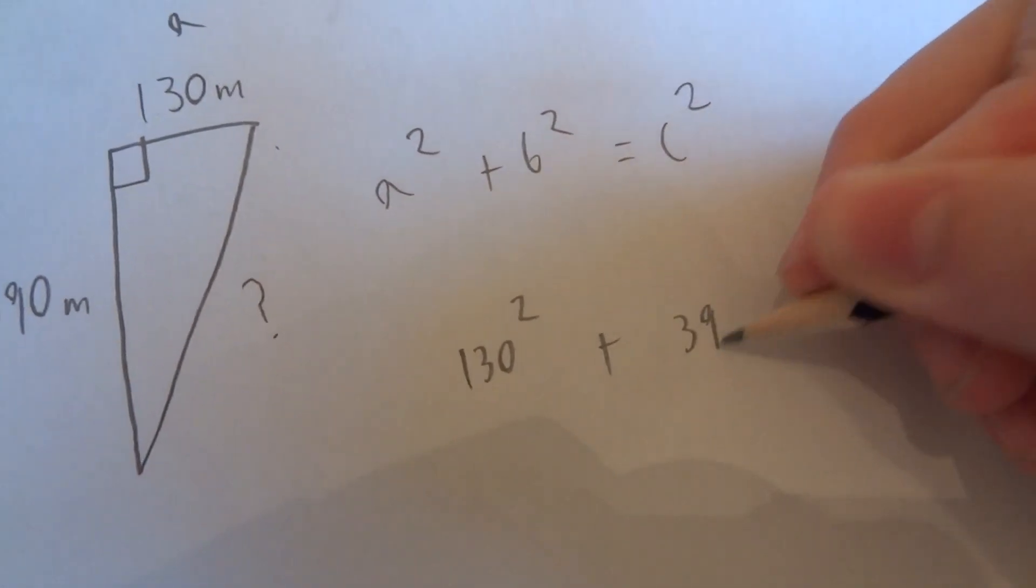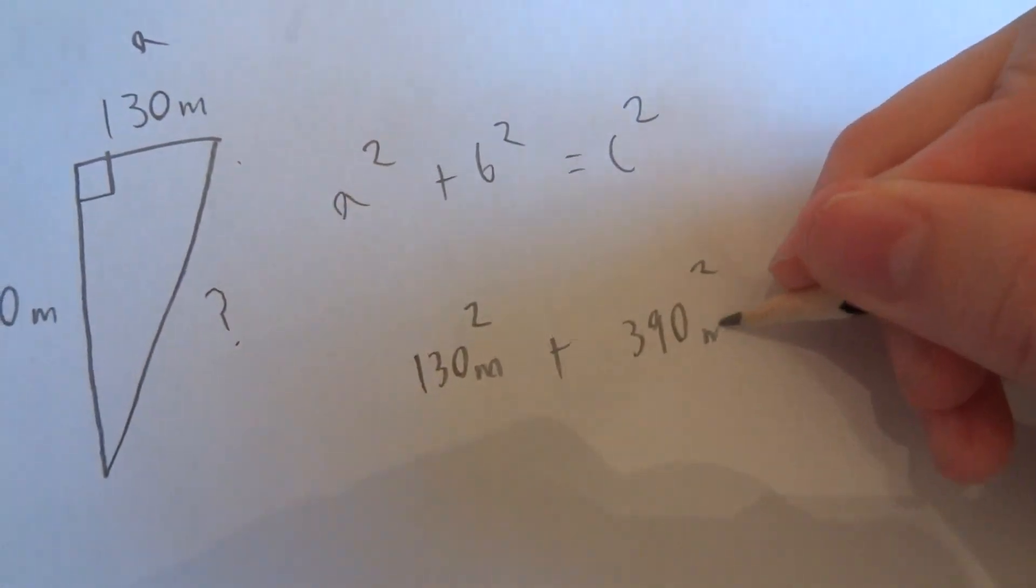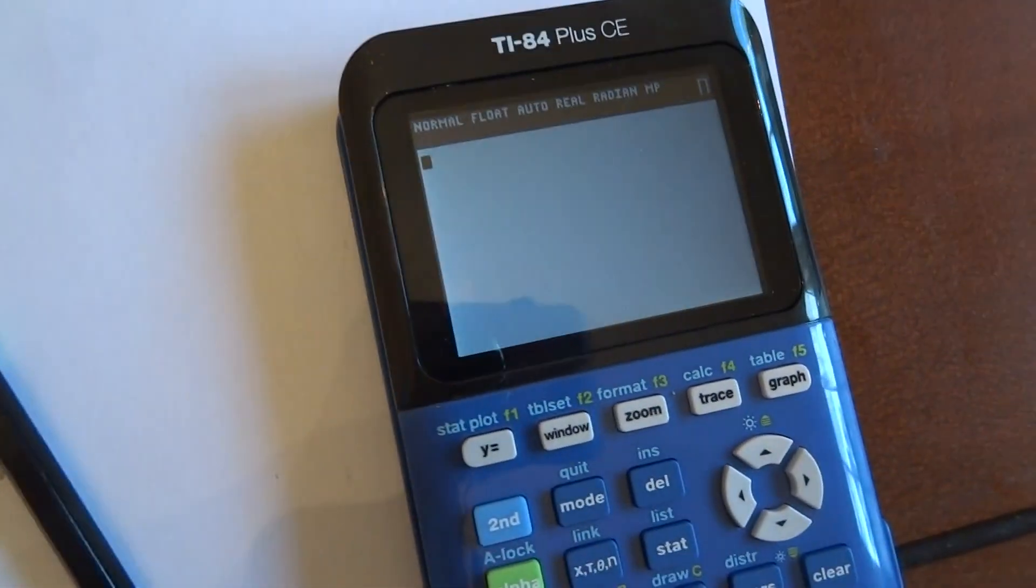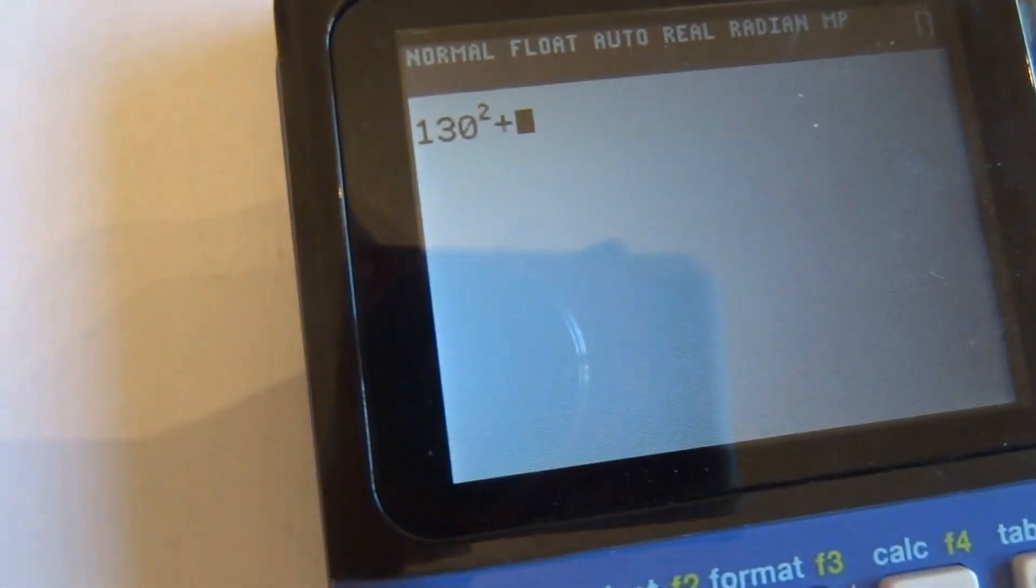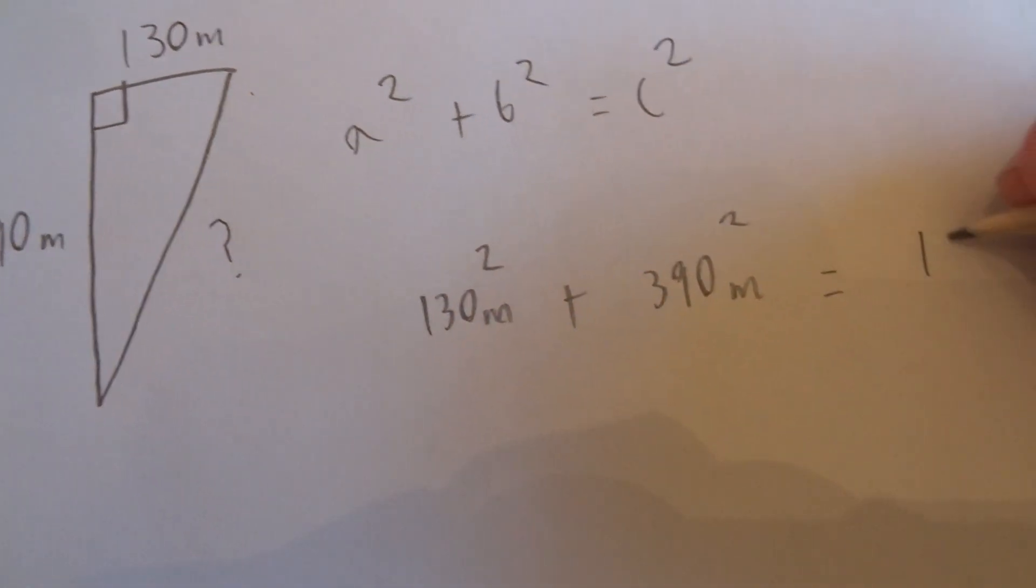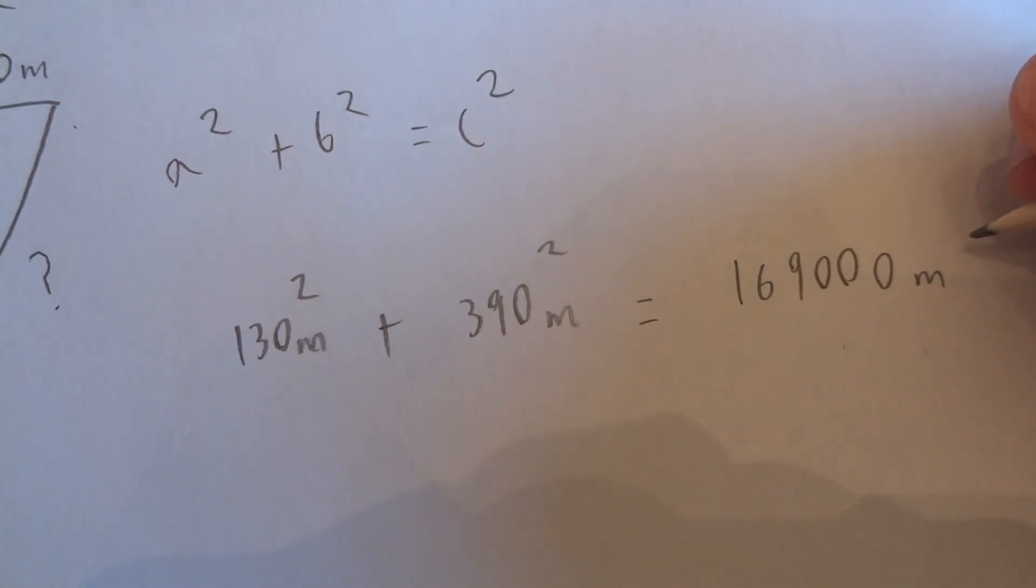So 130 squared plus 390 squared, I should put meters for both of these, is equal to this number. Now this is C squared.